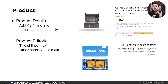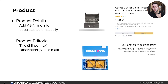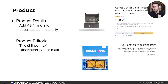For the product module, there are two options: product details and product editorial. Product details is easy — you just add your ASIN and all the info populates automatically: image, title, reviews, price, bullet points, and an add-to-cart button. Product editorial allows you to add a title and description, two lines for the title and three lines for the description. The exact character count isn't specified, but it will flag in red if you've gone over.